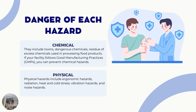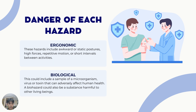Primarily humans. For the danger of each hazard: for chemical, they include toxins, dangerous chemicals, and residue of excess chemicals used in processing food products. If your facility follows good manufacturing practices, you can prevent chemical hazards. For physical, it includes ergonomic hazards, radiation, heat and cold stress, vibration hazards, and noise hazards. For ergonomic hazards, these include awkward or static postures, high forces, repetitive motion, or short intervals between activities. For biological, this could include a sample of a microorganism, virus, or toxin that can adversely affect human health. A biohazard could also be a substance harmful to other living beings.